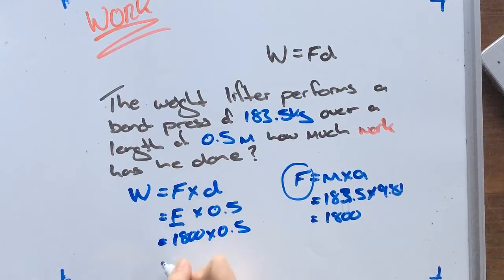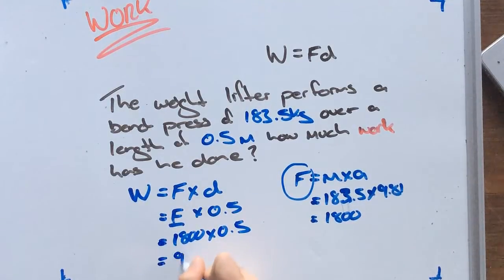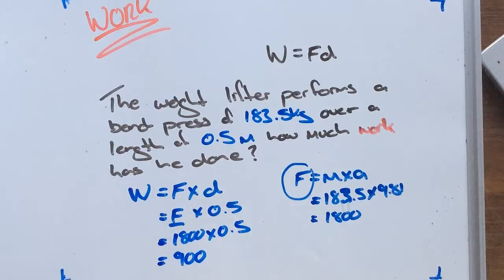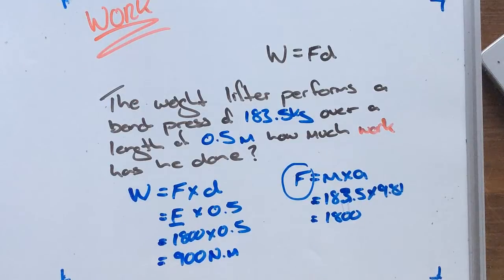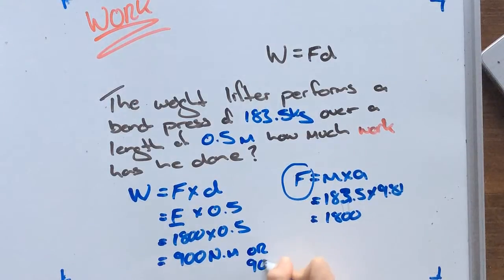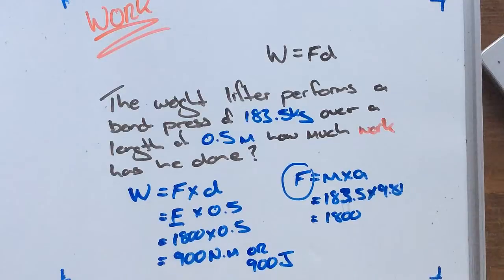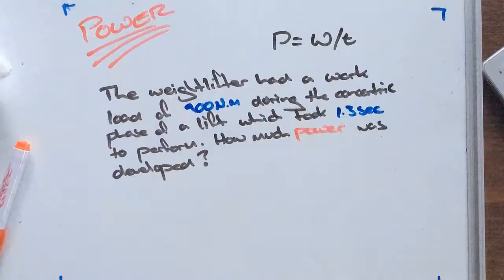So we can now take our 1800 times our 0.5, and so we are going to have a work done of 900 Newton meters, or 900 joules.